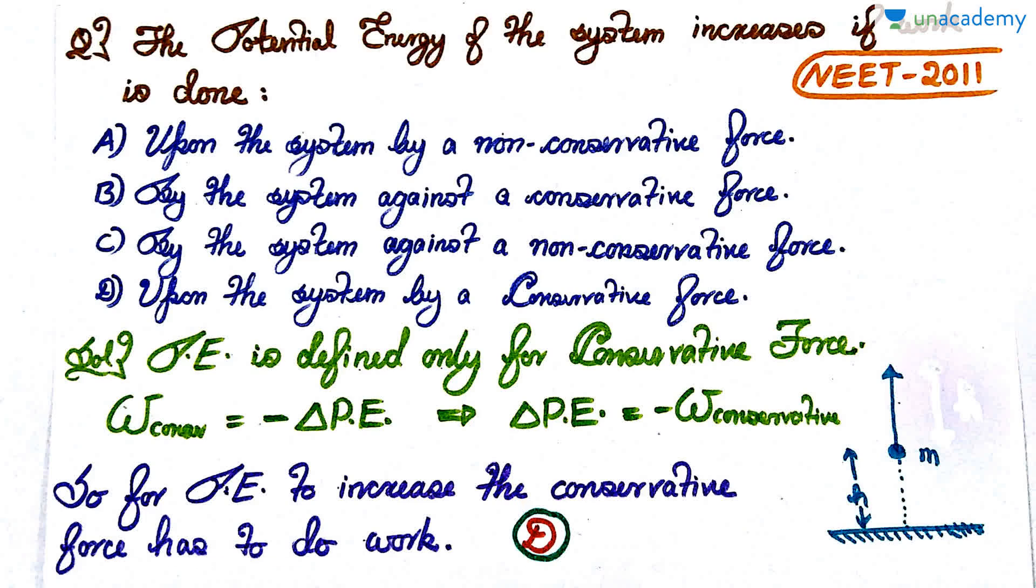Let's start off with a question from the 2011 examination. The question goes as follows: The potential energy of the system increases if work is done: option A, upon the system by a non-conservative force; option B, by the system against a conservative force; option C, by the system against a non-conservative force; and option D, upon the system by a conservative force. Pause the video, attempt the question, and then we'll discuss the solution.